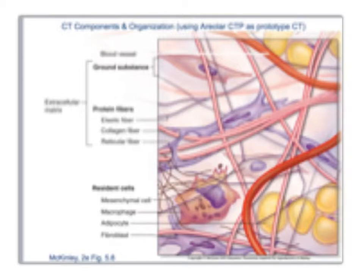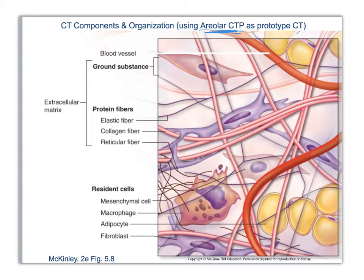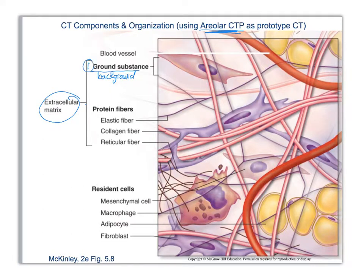Now we're going to look at the components and organization of connective tissue, which can be generalized to all types. We'll use areolar connective tissue proper as our prototype because it's easy to see. First, you have a background that everything is suspended in — that is called ground substance. It's basically the white or light, clear background that everything is floating in. The other part of the extracellular matrix is protein fibers, and there are three kinds: elastic, collagen, and reticular. The collagen fibers are usually the most noticeable — they're very thick.